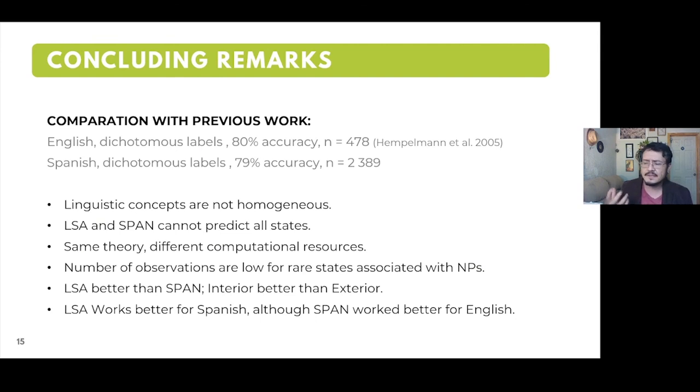As concluding remarks, if we compare these results with previous work, particularly Hempelman et al. 2005, we find that SPAN is not as relevant for the prediction of the informative state as LSA, although the accuracy is close. In that work, they reach an accuracy of 80% for English using a dichotomous labeling inspired in the work of Ellen Prince, and 478 noun phrases of written discourse, where in our study, the CINSE R, the dichotomous labeling, reached an accuracy of 79% for Spanish. As a reminder, a work in Spanish with this methodology has not been done before.